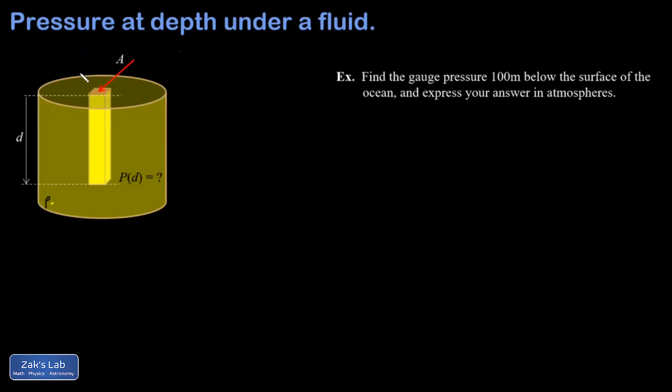The gauge pressure means we're assuming the atmospheric pressure is zero—we're doing everything relative to that. So for the gauge pressure calculation we can say the pressure at the surface is P₀ and we're calling that zero.